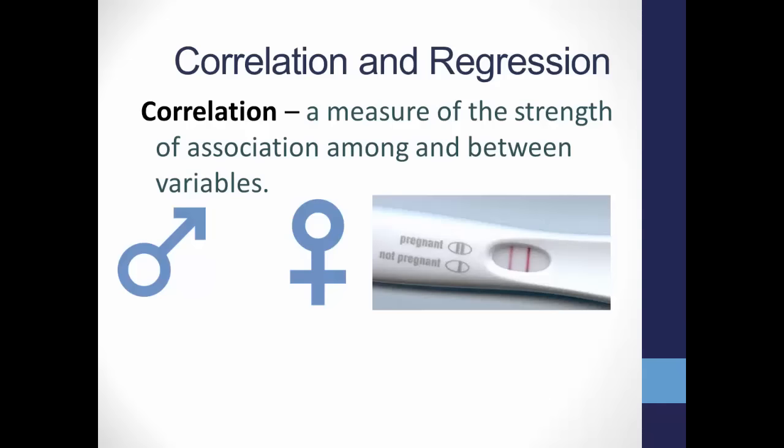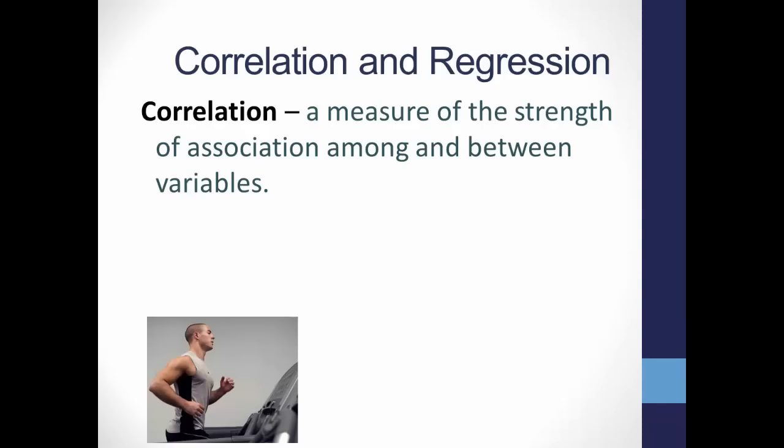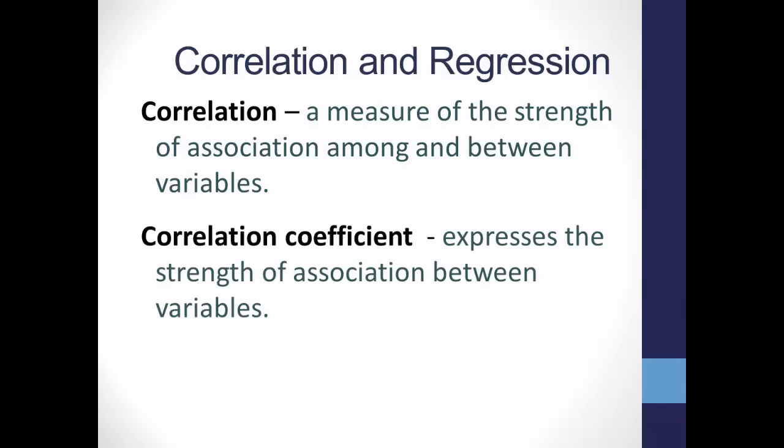You'll usually find correlation analysis when you are measuring two continuous-level variables, such as amount of time running on a treadmill, measured as a continuous variable, and calories burned, also measured as a continuous variable. We use a correlation coefficient with continuous-level variables to express the strength of that association — whether the connection is a strong one, a weak one, or non-existent.